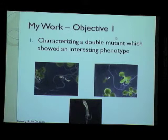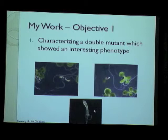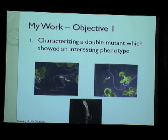The first objective of my work was to characterize an interesting double mutant phenotype discovered earlier in the lab. It showed a pin-like phenotype, which is clearly observable, and it never showed more than a single cotyledon while being grown. A wild-type plant grown for the same time shows two cotyledons and two true leaves, whereas this plant shows just a single cotyledon and is not growing well at all.